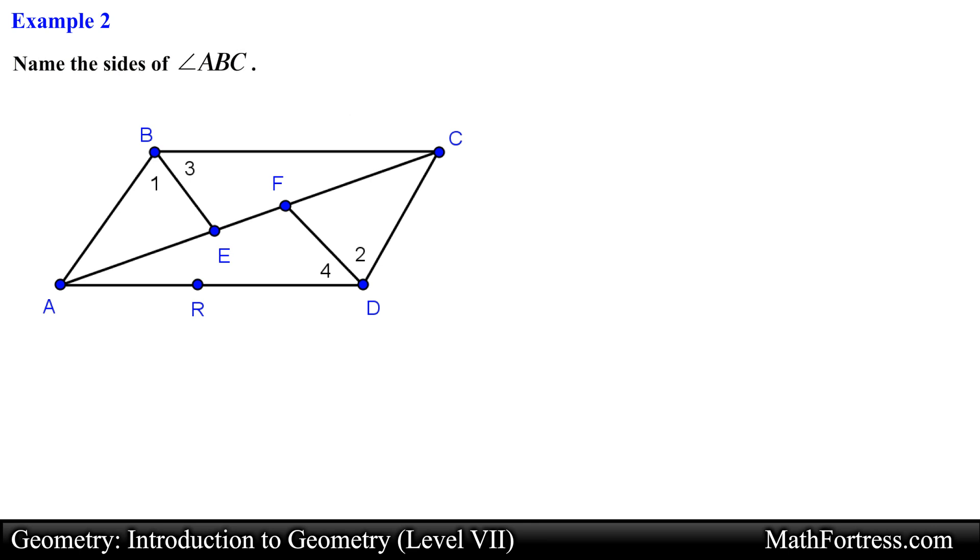Name the sides of angle ABC. Let's first identify angle ABC so we need to locate points A, B, and C. Having found the points we see that we are dealing with the highlighted angle that contains point B as its vertex.